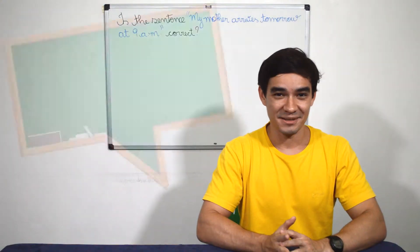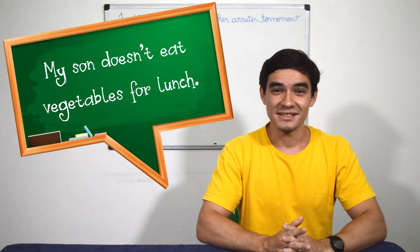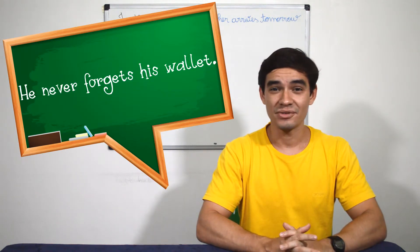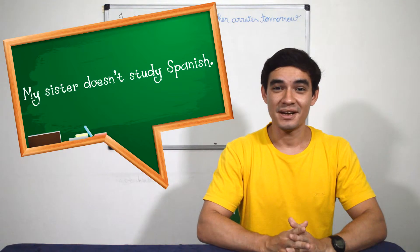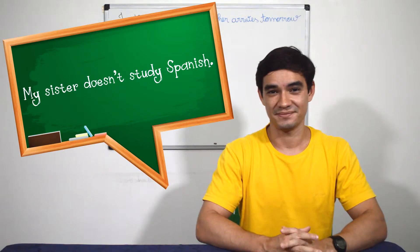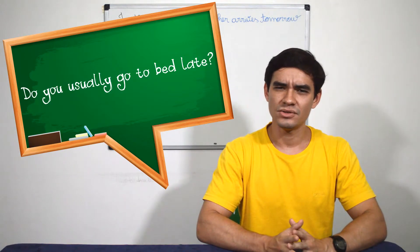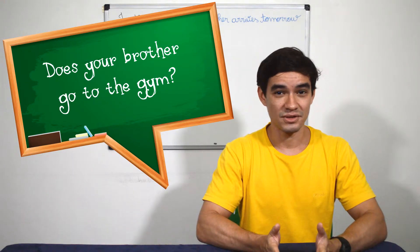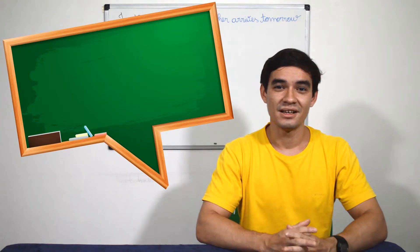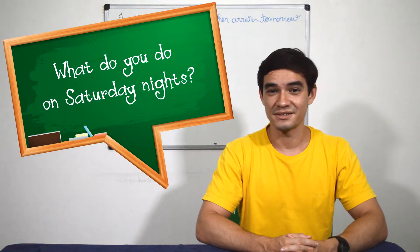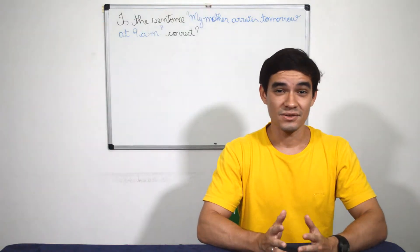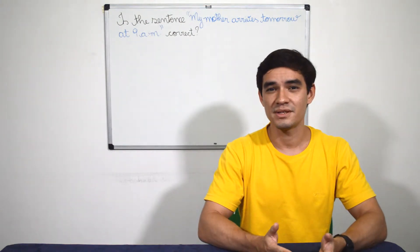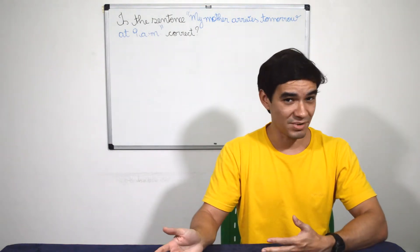More examples: my son doesn't eat vegetables for lunch. He never forgets his wallet. My sister doesn't study Spanish. Do you usually go to bed late? Does your brother go to the gym? What do you do on Saturday nights? So, the third use gives the idea that something happens repeatedly, as a habit.